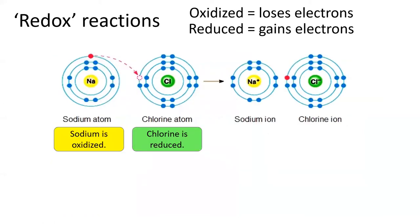When an element loses an electron, we say that element is oxidized. When an element gains an electron, we say that element is reduced, which gives us the name redox for reactions in which electrons are transferred. The other two reaction flavors from chapter four, precipitation and acid base, do not involve an electron transfer.